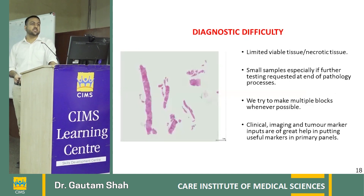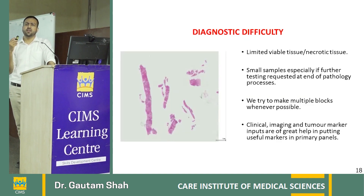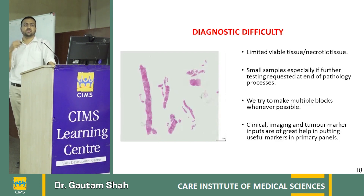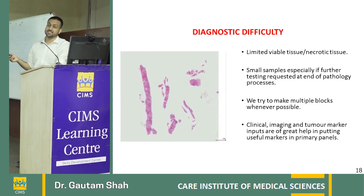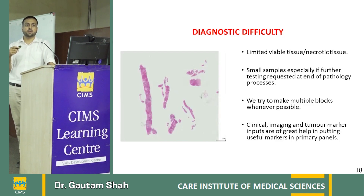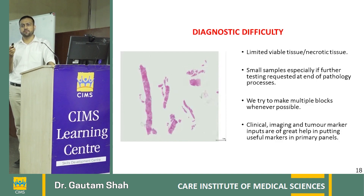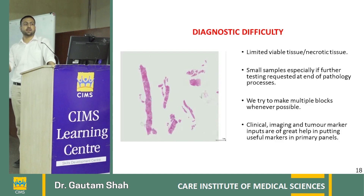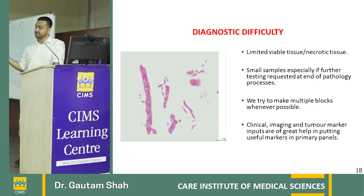Regarding limitations of IHC: we often get trucut biopsies or punch biopsies — small biopsy material. In high-grade tumors with necrotic areas, only a small viable tumor remains, making an extended IHC panel very difficult. Sometimes clinicians ask us to preserve tissue for future EGFR or other molecular testing. To manage this, when we have five to seven cores, we try to make two cores per block, creating two or three blocks — one for IHC and another for molecular studies.